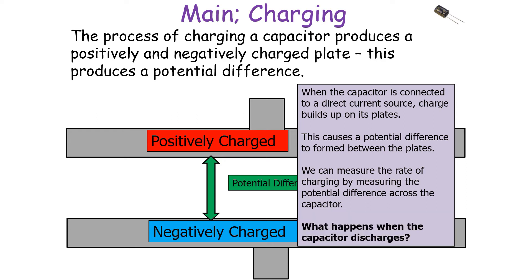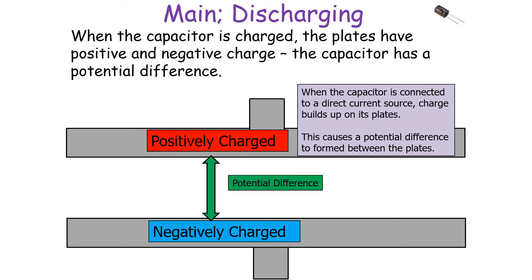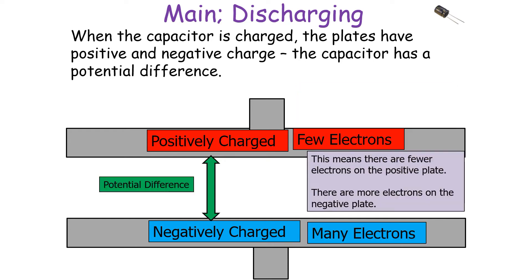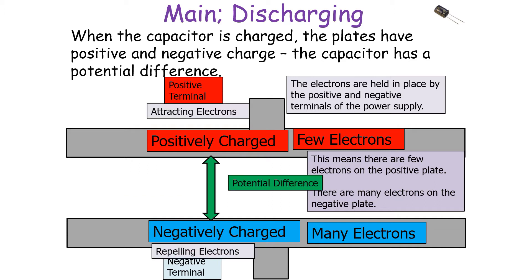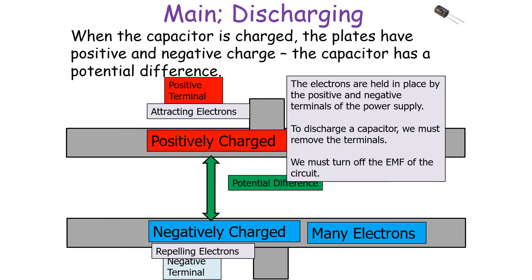When the capacitor is connected to a direct current source, charge builds up on its plates causing a potential difference to form between the plates — fewer electrons on the positive plate and more electrons on the negative plate. These electrons are held in place by the positive and negative terminals of the power supply: the positive terminal attracts electrons off the positively charged plate, whilst the negative terminal repels electrons onto the negatively charged plate. To discharge a capacitor we must remove the terminals, as it is the terminals that hold the charge imbalance in place.